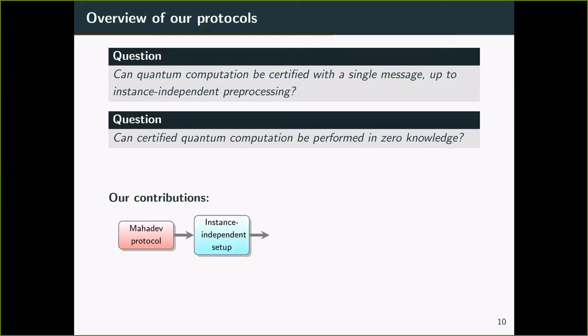First, we show that the key generation step can be made instance-independent. So this can be done before the verification starts. And this turns the four-message protocol into a three-message protocol with instance-independent preprocessing. And then the constant soundness error can be improved by applying parallel repetition. We show a parallel repetition theorem for the verification protocol. And then we apply the round-reduction technique called Fiat-Shamir to reduce the round complexity down to a single message.